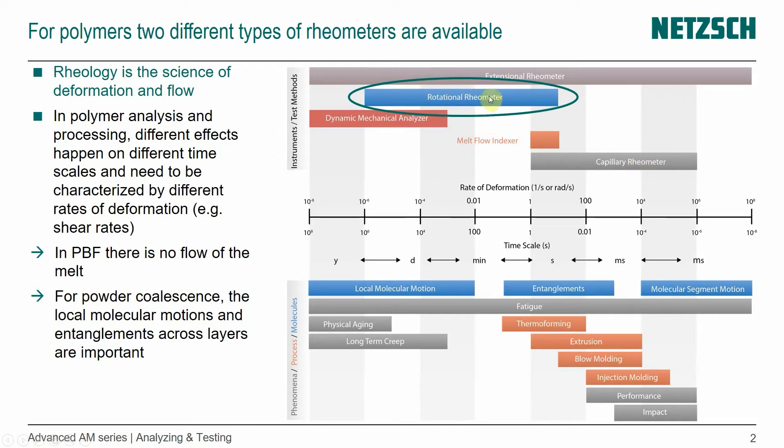If we have no flow or not really a deformation on the material, low deformation like we have with powder coalescence, then a rotational rheometer is most interesting because we're also looking at low timescales where we want to study the molecular motion and entanglement that can happen. Disentanglement for the flow to happen and entanglement is something we would really like to achieve across the layer boundaries.